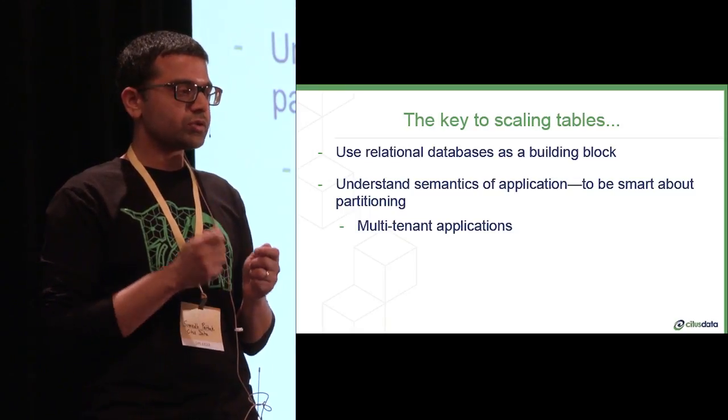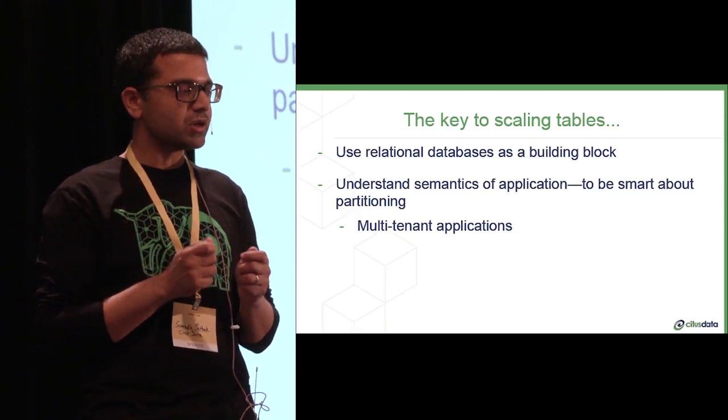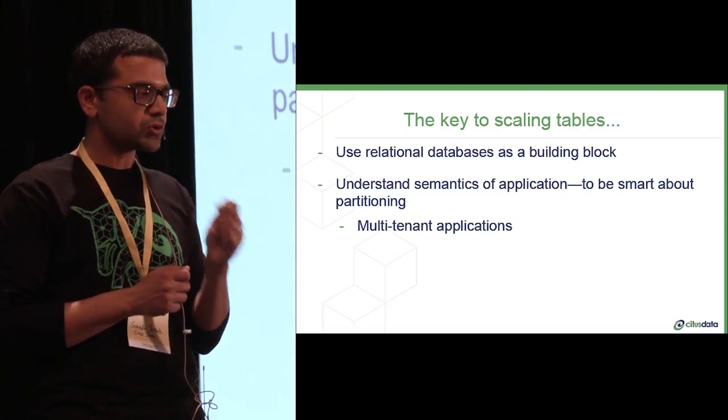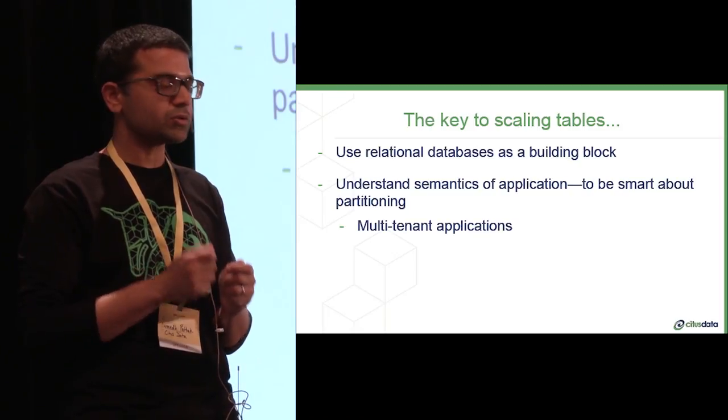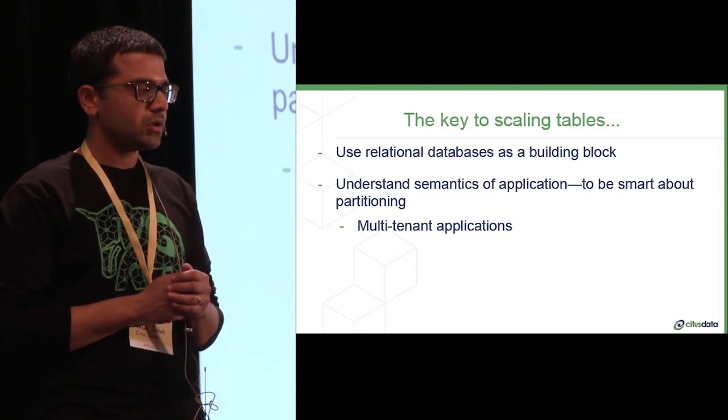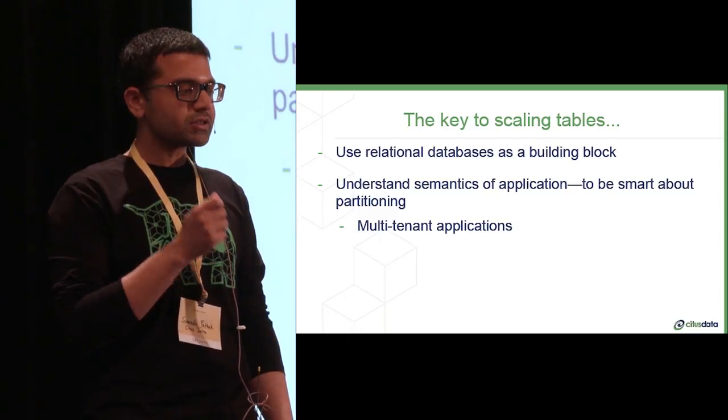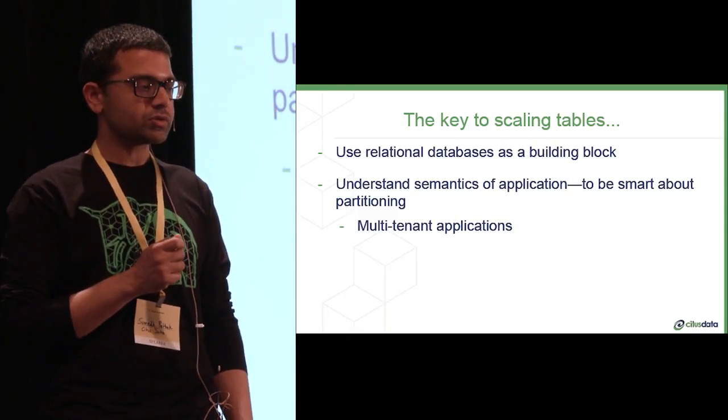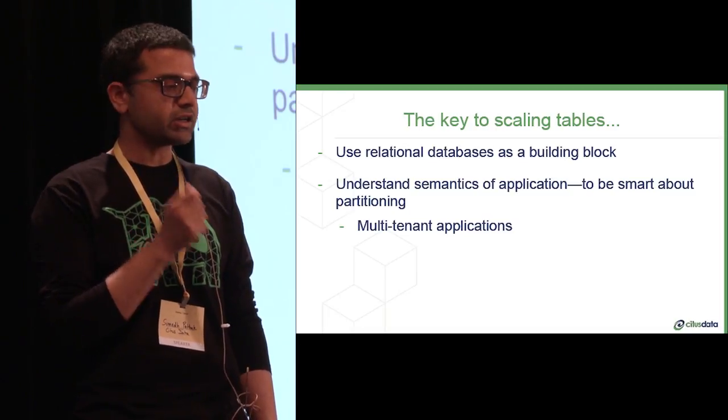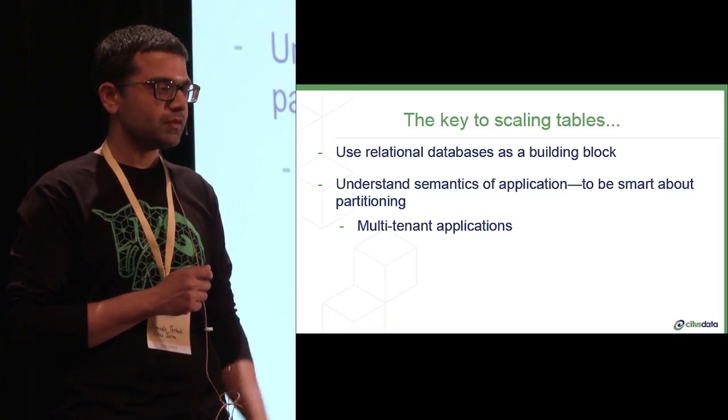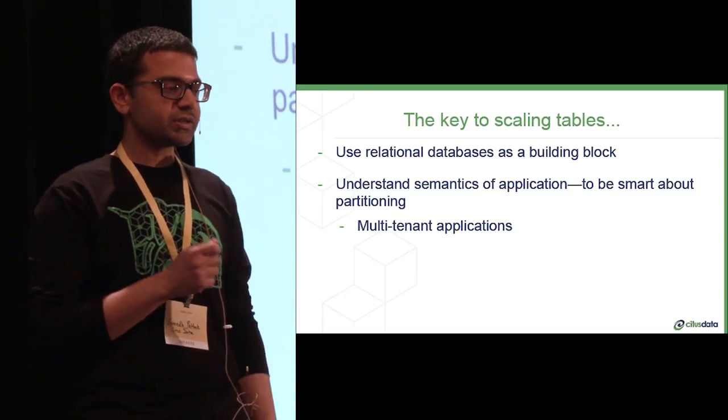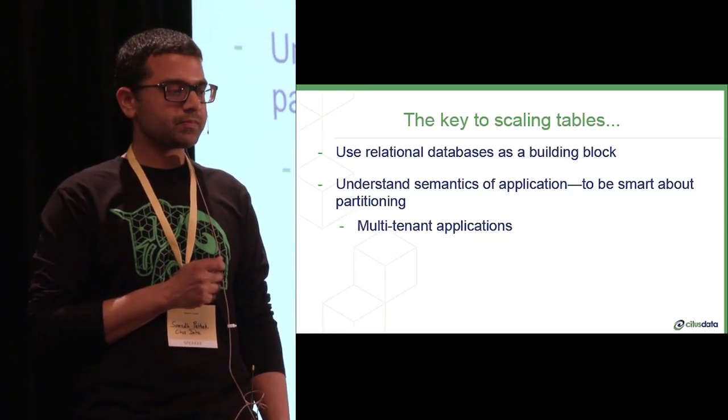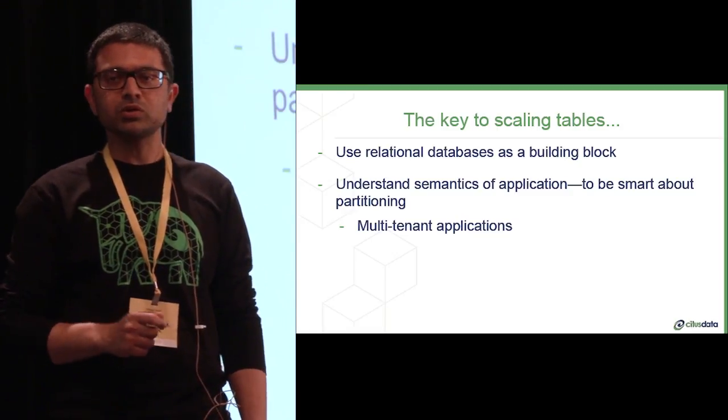So the key for us was using the relational database as a building block. Each worker node is a relational database itself. Allows us to maintain indexes, constraints, column defaults on each node. Also, by understanding some of the semantics of the application, we can scale complex relational models while maintaining some of the interdependencies between them. With multi-tenant applications, for example, choosing the tenant ID as a partition column allows us to maintain foreign key relationships between them and allows applications to migrate with minimal changes.